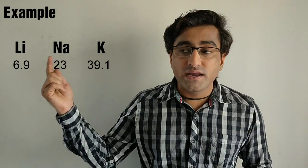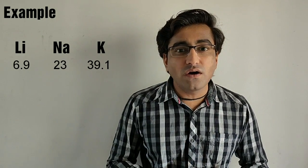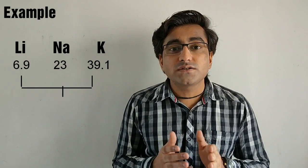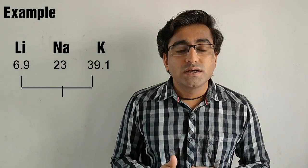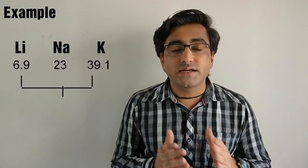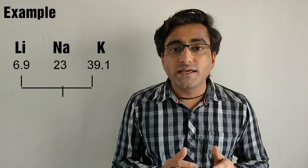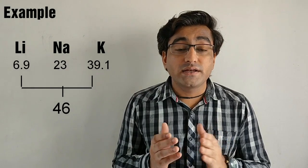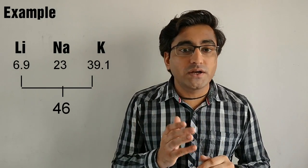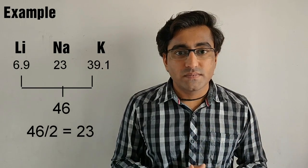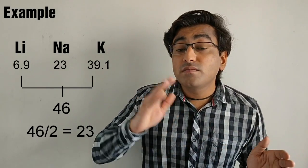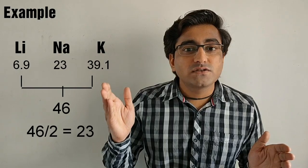As you can see, I have arranged the three elements in the increasing order of their atomic masses. Now let us take the mean of the atomic masses of the first and the third element. The first element is lithium and the third element is potassium, with masses 6.9 and 39.1 respectively. On taking the mean, that is adding them: 39.1 plus 6.9 equals 46, and divided by 2 gives us 23. The mean of the first and the third element is 23, and the mass of the middle element, sodium, is also 23.